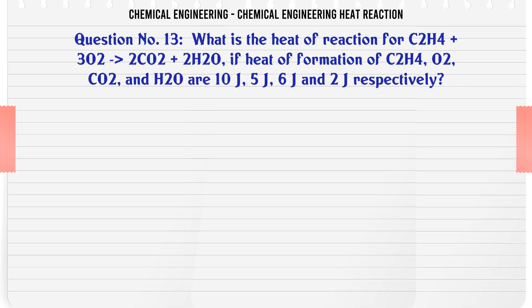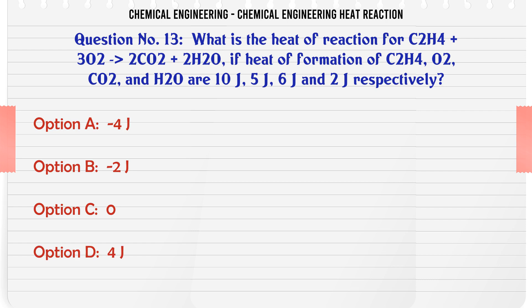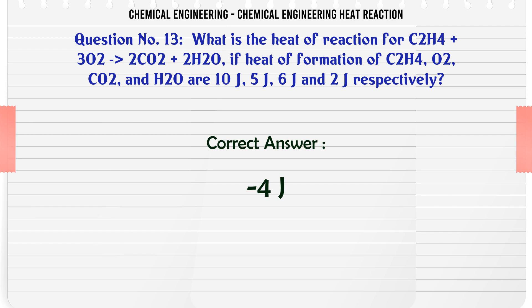What is the heat of reaction for C2H4 + 3O2 → 2CO2 + 2H2O if heat of formation of C2H4, O2, CO2, and H2O are 10J, 5J, 6J, and 2J respectively? A: -4J, B: -2J, C: 0, D: 4J. The correct answer is 4J.